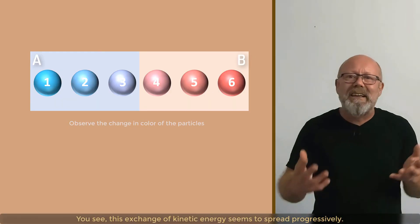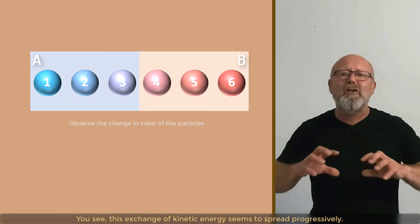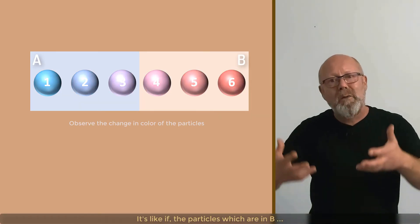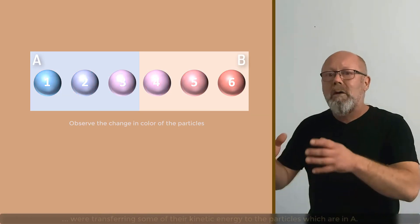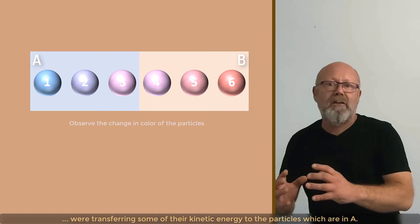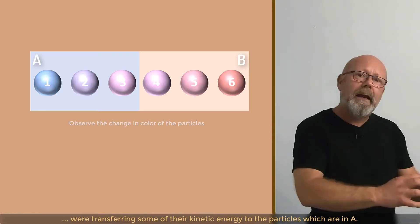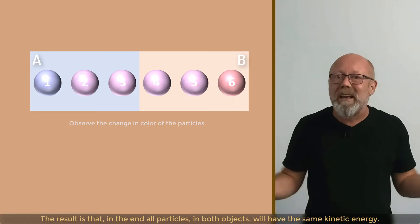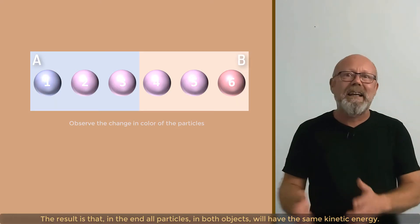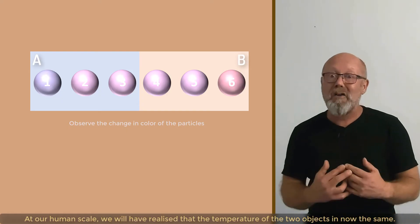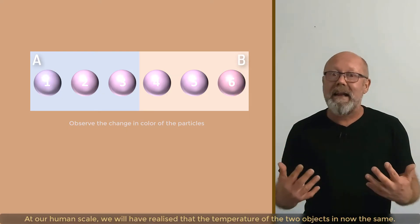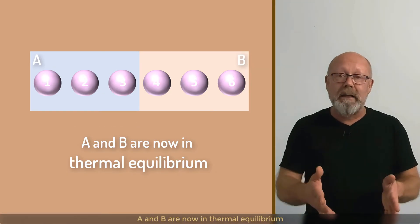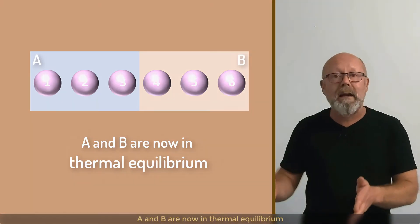And the same thing happens between particles 1 and 2 and 5 and 6. You see, this exchange of kinetic energy seems to spread progressively. It's like if the particles which are in B were transferring some of their kinetic energy to the particles which are in A. The result is that, in the end, all particles in both objects will have the same kinetic energy. At our human scale, we will have realized that the temperature of the two objects is now the same. A and B are now in thermal equilibrium.